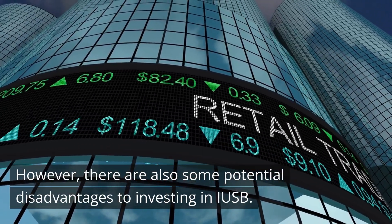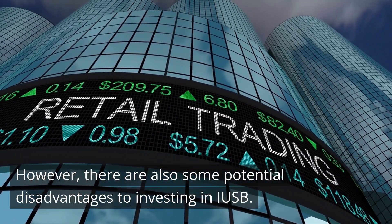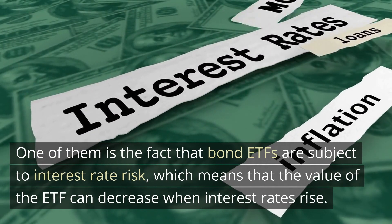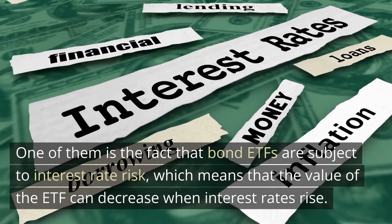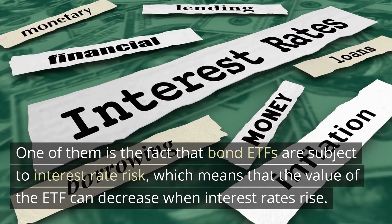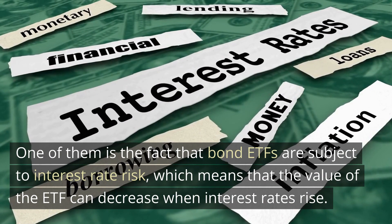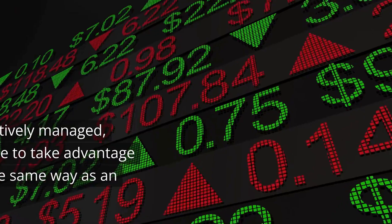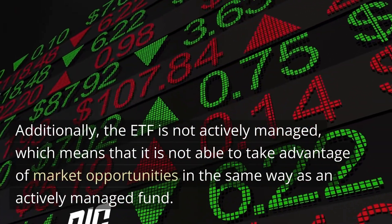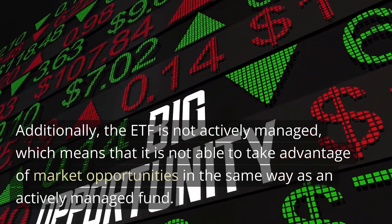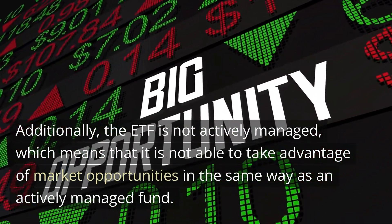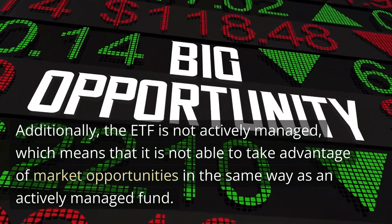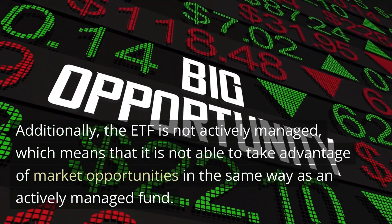However, there are also some potential disadvantages to investing in IUSB. One of them is the fact that bond ETFs are subject to interest rate risk, which means that the value of the ETF can decrease when interest rates rise. Additionally, the ETF is not actively managed, which means that it is not able to take advantage of market opportunities in the same way as an actively managed fund.